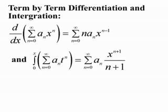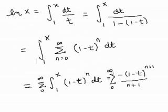If we want to find the derivative with respect to x of the sum from n equals 0 to infinity of a sub n x to the n, we differentiate inside of the summation — we're able to interchange the differentiation with the summation — and we arrive at the sum from 0 to infinity of n times a sub n times x to the n minus 1. Similarly, we can integrate term by term: the integral from 0 to x of the sum from n equals 0 to infinity of a sub n t to the n is the sum from n equals 0 to infinity of a sub n times x to the n plus 1 over n plus 1.